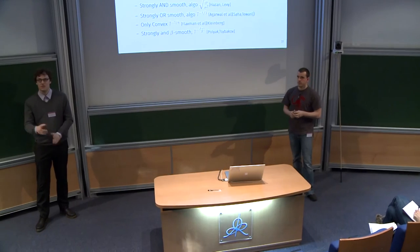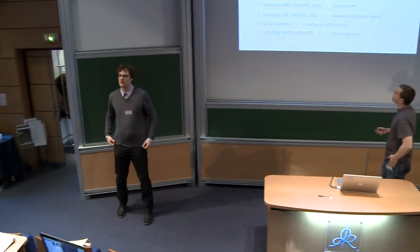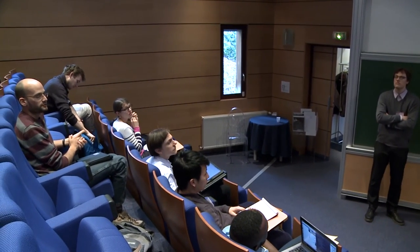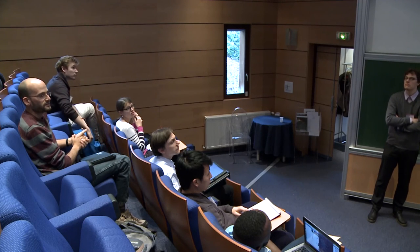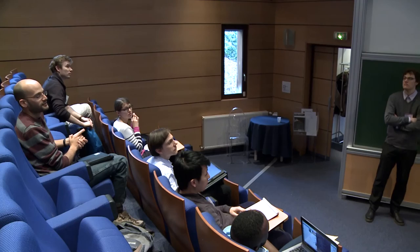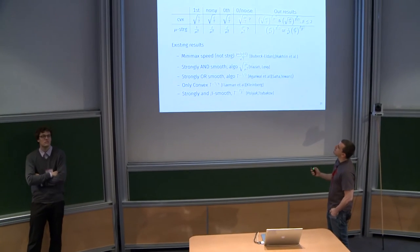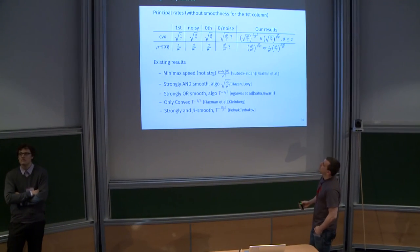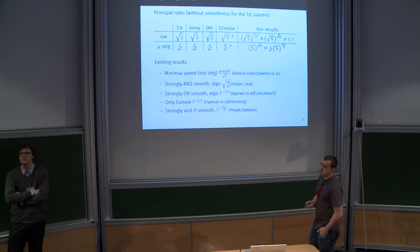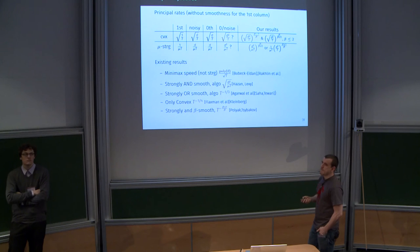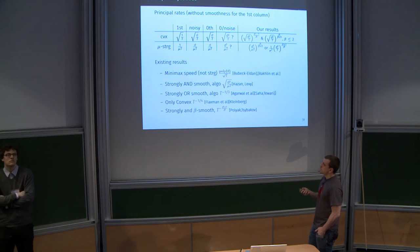During Q&A, an audience member asks about the conjecture: does the d^2/t rate assume any particular smoothness? The speaker notes there is a lower bound for two-smooth and mu strongly convex functions in the same zero-order stochastic setting. The speaker acknowledges this and thinks the settings may not be the same, as they allow querying outside the constraint set.